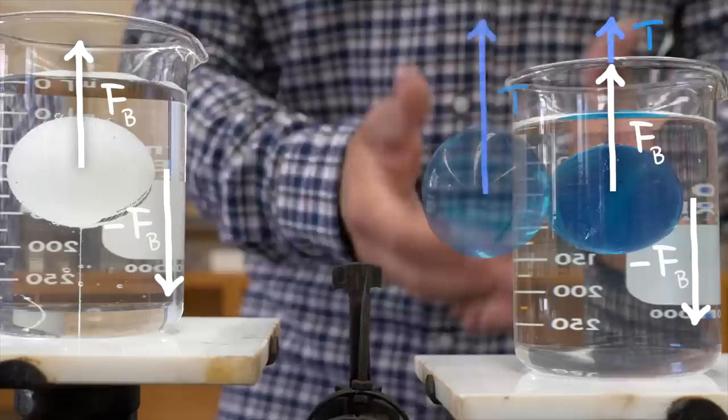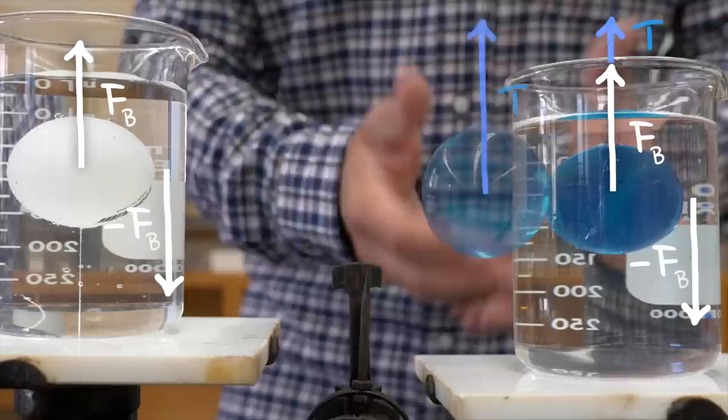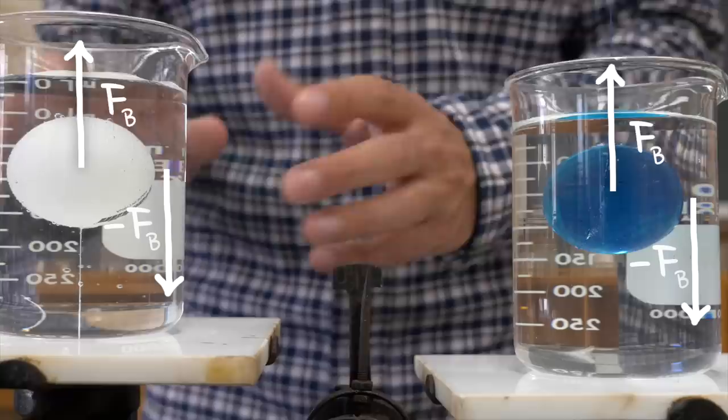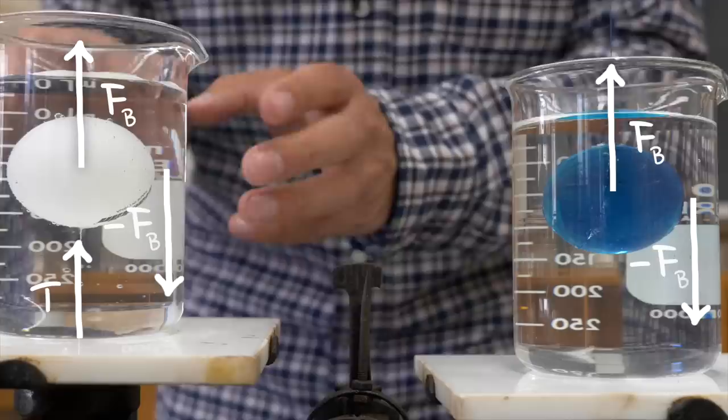But for the ping-pong ball, the downward force on the water is almost entirely counteracted by the upward force of the tension in that string on the bottom of the beaker. And therefore the weight of this beaker only increases by the weight of the ping-pong ball itself.